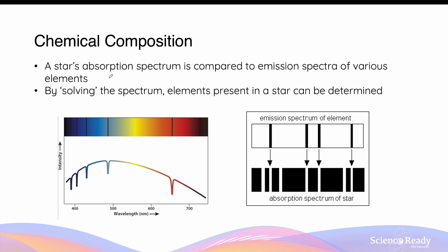A star's absorption spectrum also provides information on its chemical composition — specifically what elements are present in the gaseous layers of the star. Different elements produce unique and characteristic emission spectra due to their unique atomic structure. By comparing the stellar spectrum with the emission spectra of various elements, we can identify which elements were responsible for the absorption lines and thereby determine the star's chemical composition.